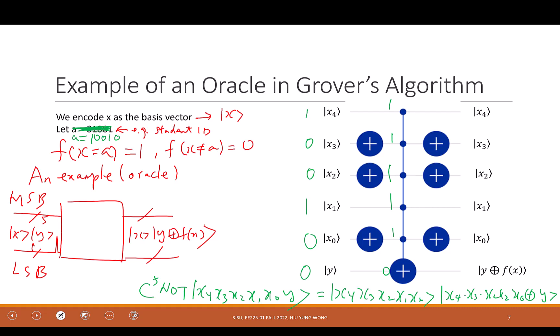After going through the full circuit with X = 1, 0, 0, 1, 0, the important thing is X does not change — it's still the same. But Y equals 0 XOR f(X). Since f(X) is 1, we get Y = 1. The circuit correctly implements the oracle.